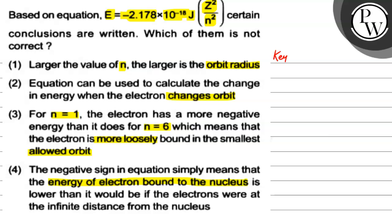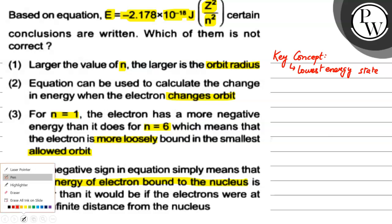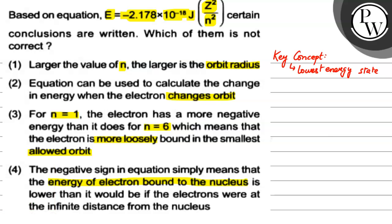Let's do this. First of all, we will see the key concept. The key concept is very subtle — we focus on the lowest energy state of an electron. We will primarily solve this question by checking all the options.